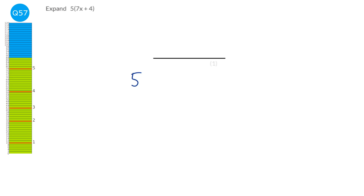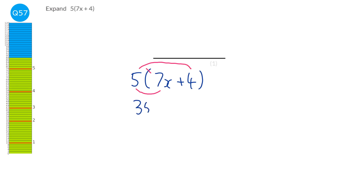Using smiles and rainbows to expand brackets. 5 times 7 is 35 — it's 7x so it's 35x. And 5 times 4 is 20. So the answer is 35x plus 20.